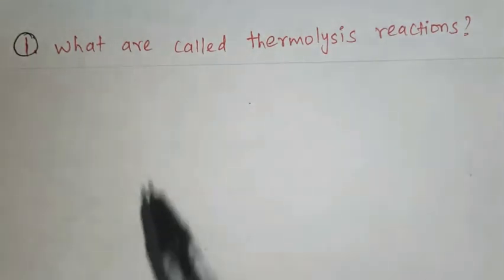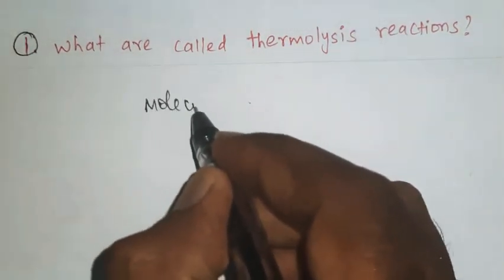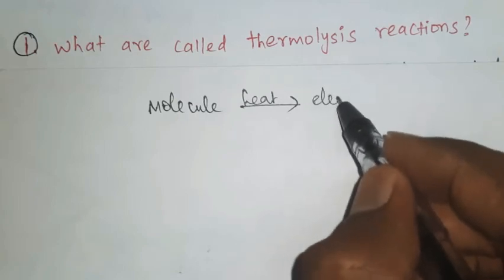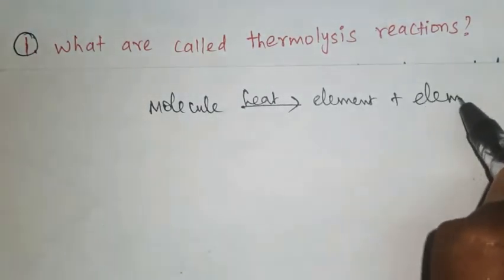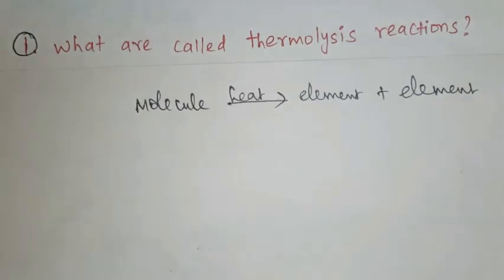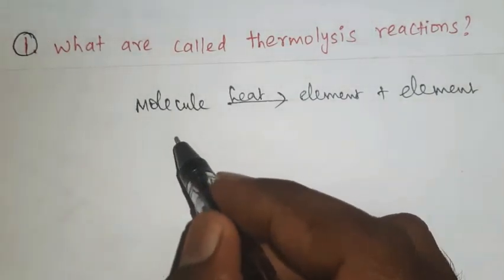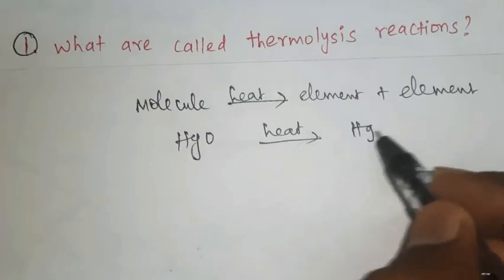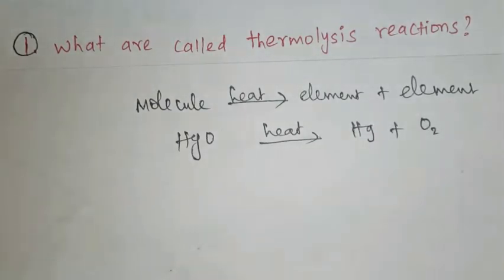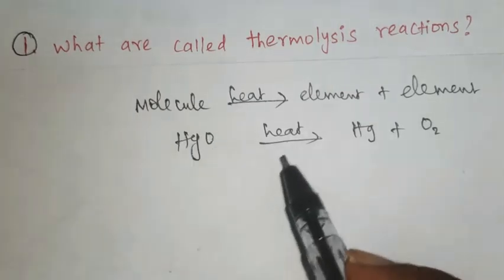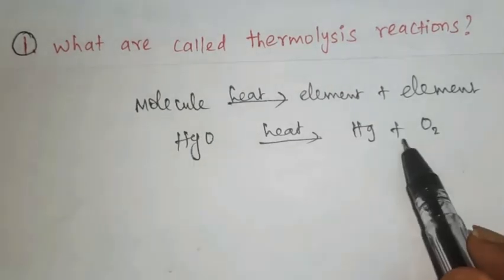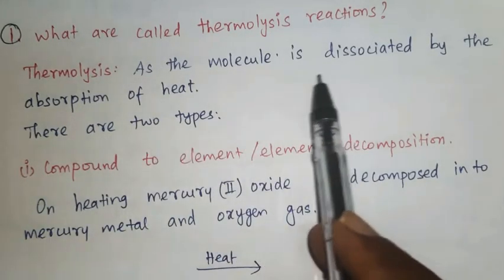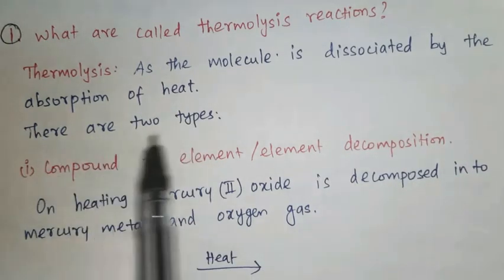In a thermolysis reaction, a molecule will dissociate when heat is applied — the molecule or compound will decompose. For example, mercury(II) oxide (HgO), when heat is applied, mercury will decompose. A molecule dissociates — that is known as a thermolysis reaction. The molecule is dissociated by the absorption of heat. There are two types.